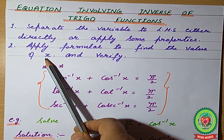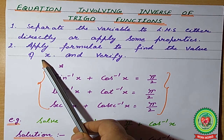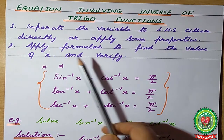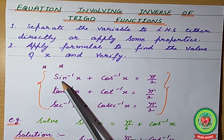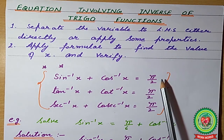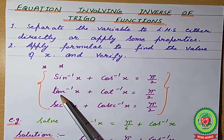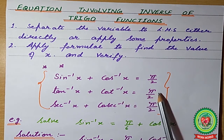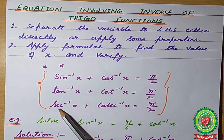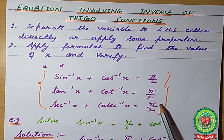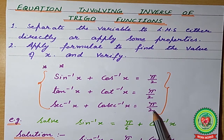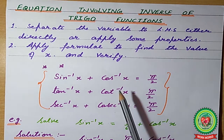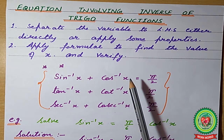If there is only one solution then it is fine, but if we have more than one solution, we must verify which is the required solution. The very important properties are: sin⁻¹x + cos⁻¹x = π/2; tan⁻¹x + cot⁻¹x = π/2; sec⁻¹x + cosec⁻¹x = π/2. They all have their domain and range, and we will use these properties wherever required.